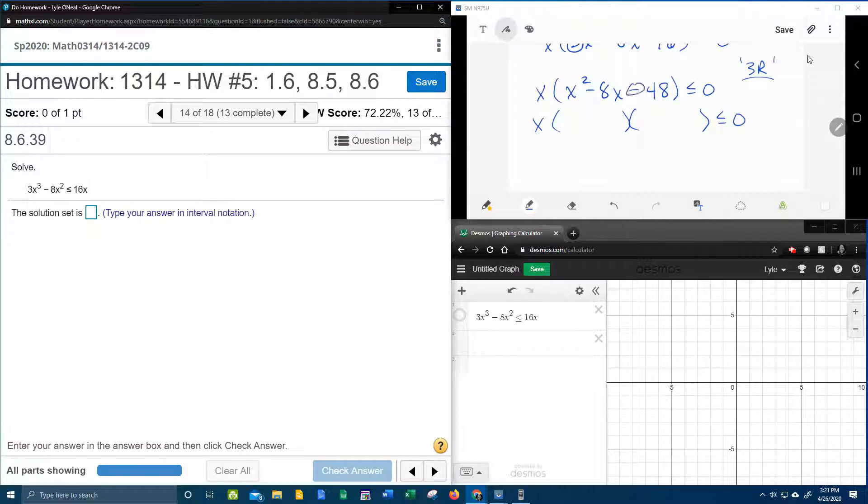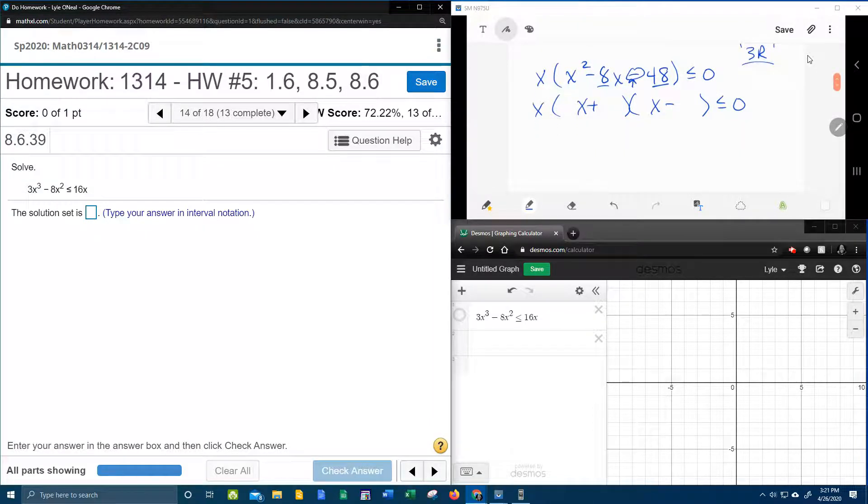And then we're going to see if this will factor as a standard trinomial. So the signs are going to be different. Let's subtract x and x for the x squared. And then I'm going to need numbers that multiply to make 48. Let's subtract and make 8. Let's make a little list and see what we've got here. Obviously, we know that 16 times 3 is 48. We just did it. But 16 minus 3 is 13, not 8.